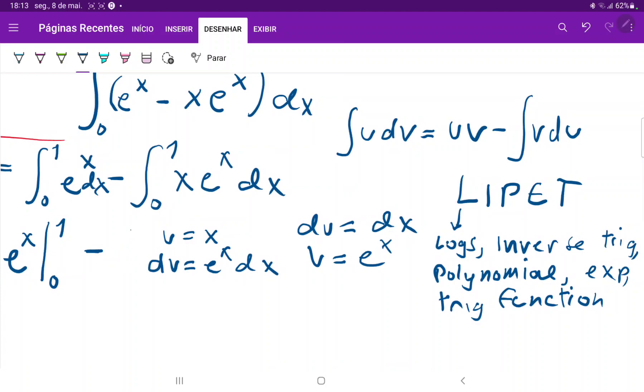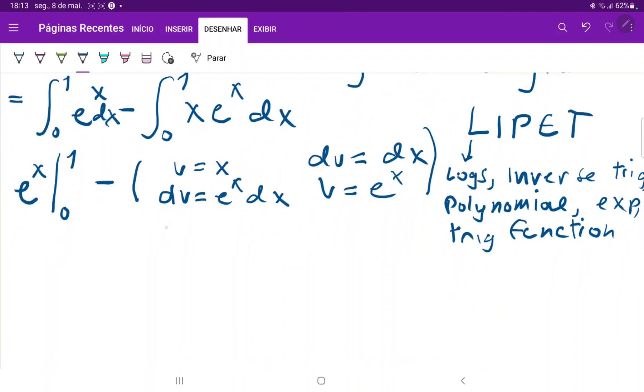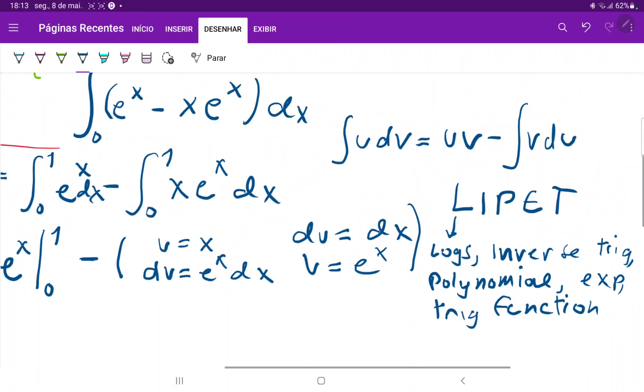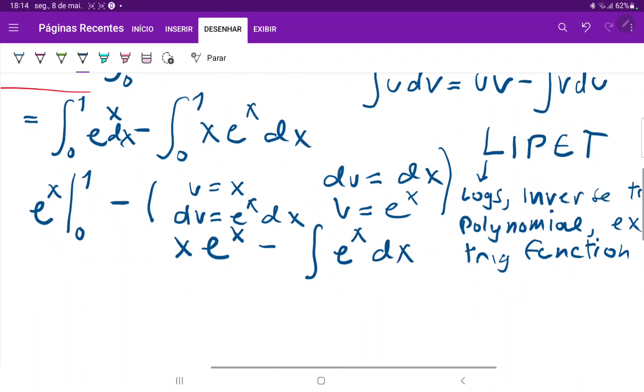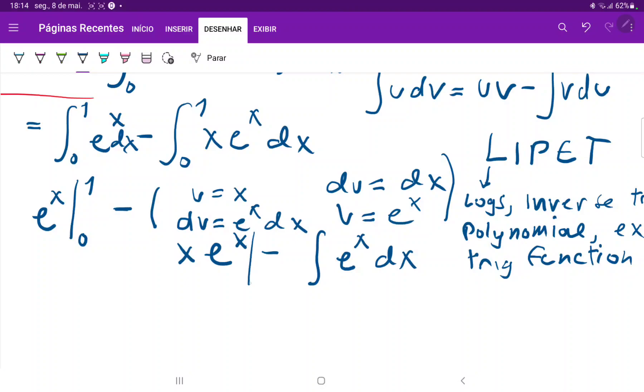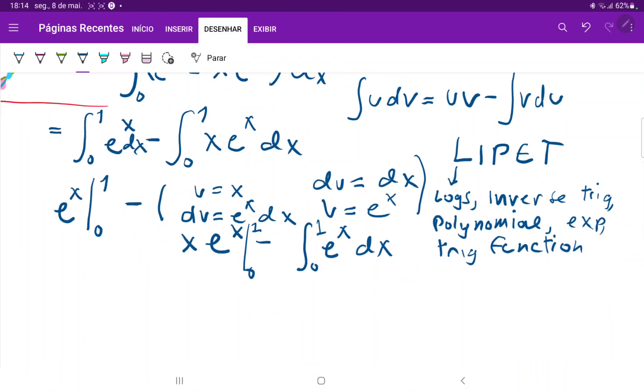So that is minus, and I'm just going to put a parenthesis here so that we can set it up. So minus, this is the uv, right? So this is just x times e to the x, minus the integral of v du. So that is e to the x, du is just dx. Let me see if I did this right. uv minus the integral of v du. Yes, that is correct. And it is e to the x. This is also from 0 to 1. It has the same boundaries. And this is also from 0 to 1.